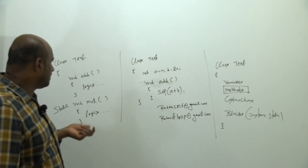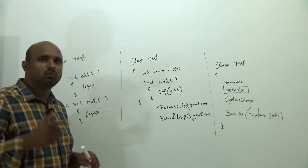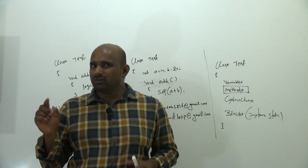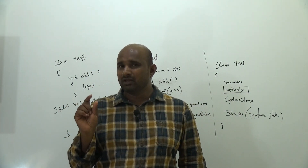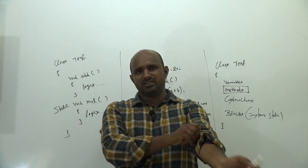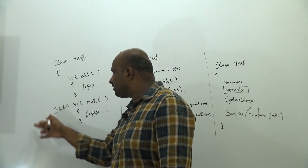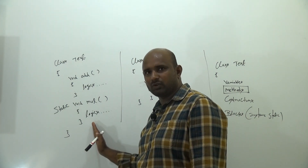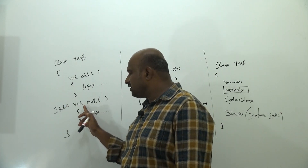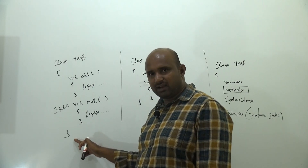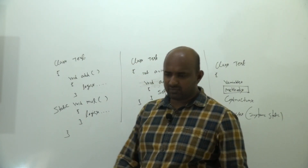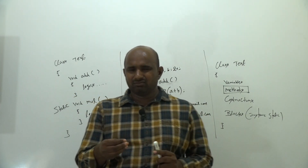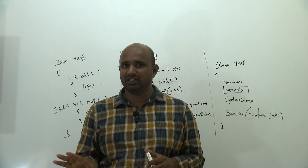You might ask: both methods are used to write logics, so what is the difference? The difference will be discussed as part of polymorphism. The main difference is: instance methods can be overridden in child classes in the future, while static methods cannot be overridden. At the initial level, think of both methods as used to write the logics of the application.